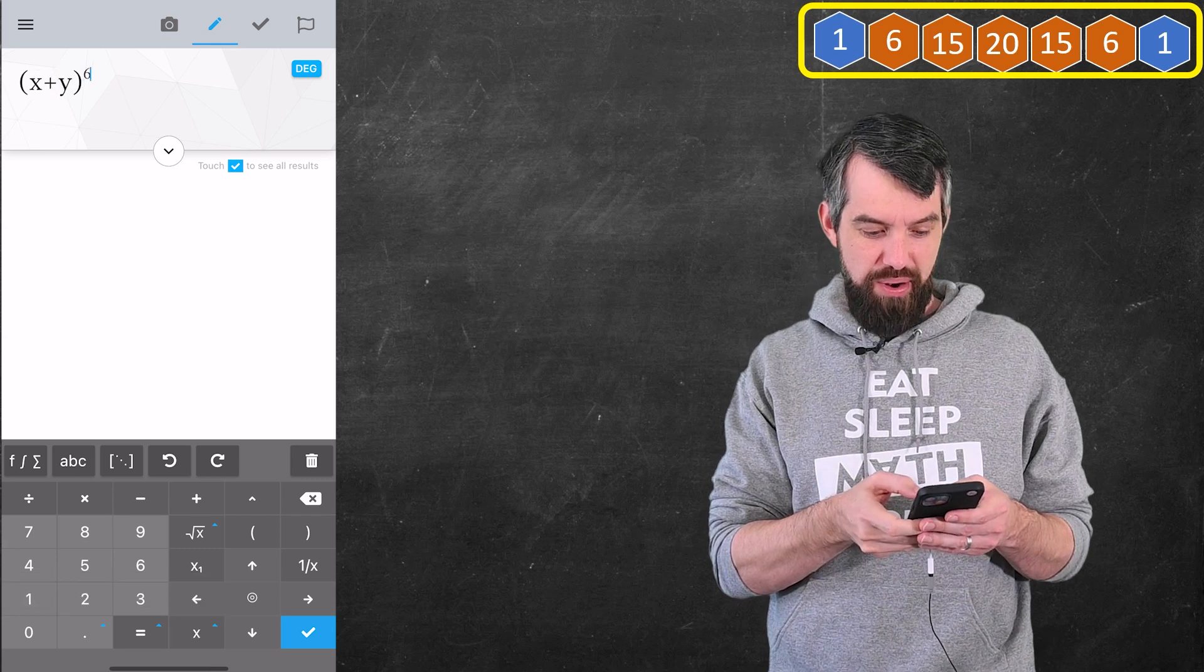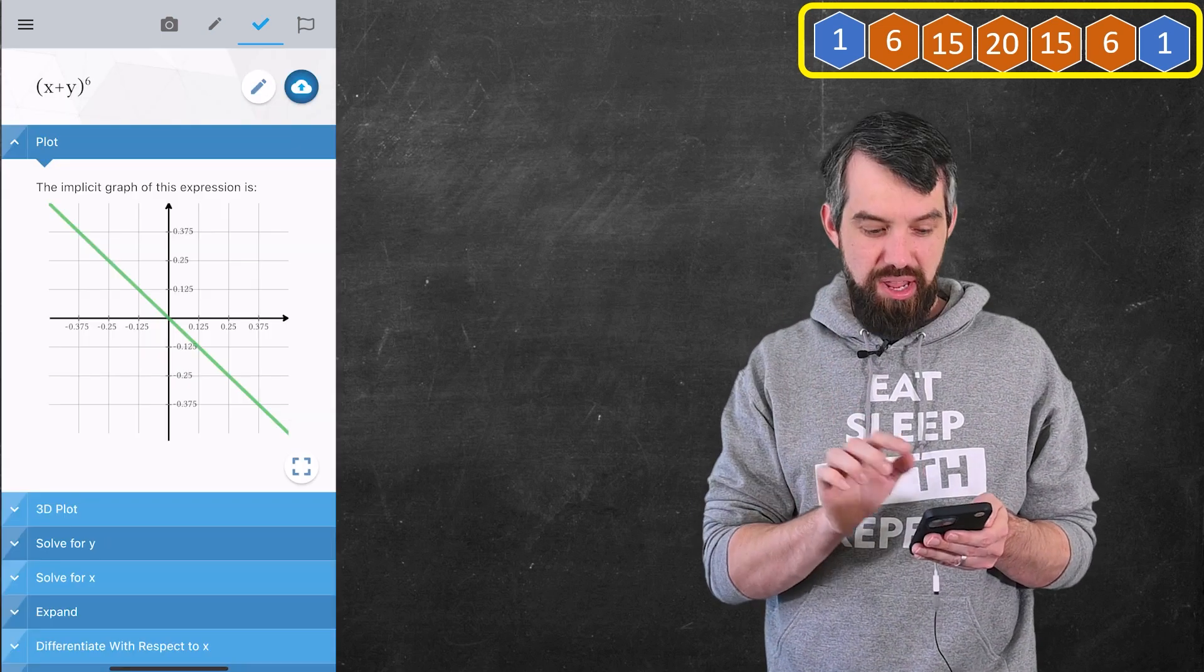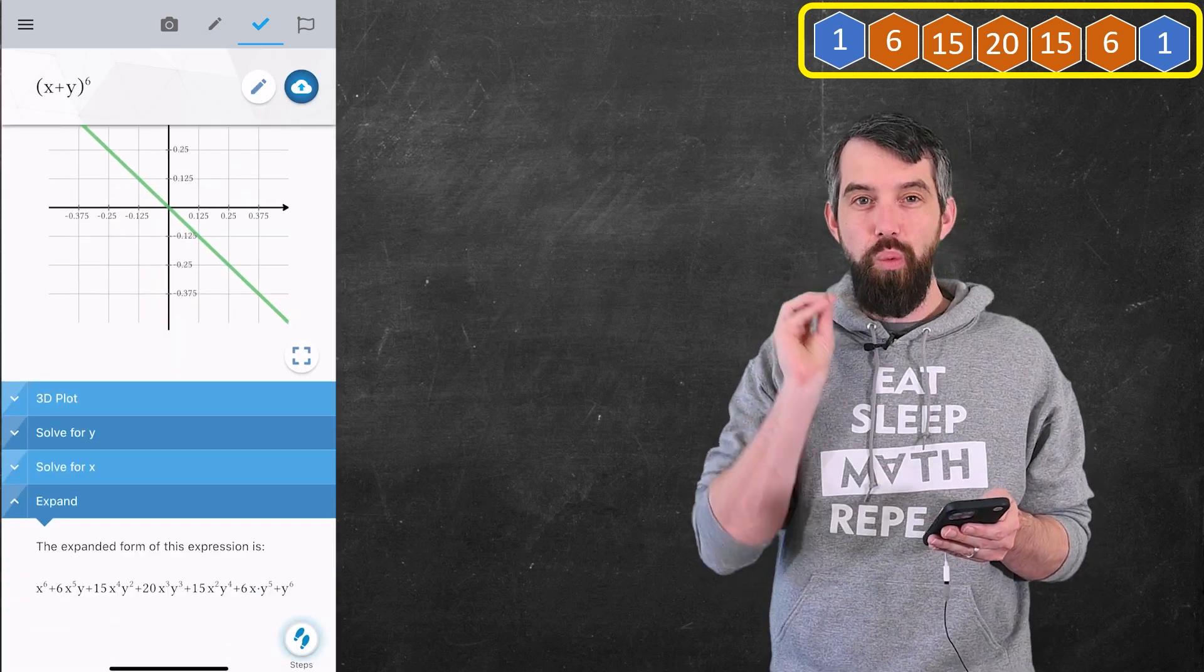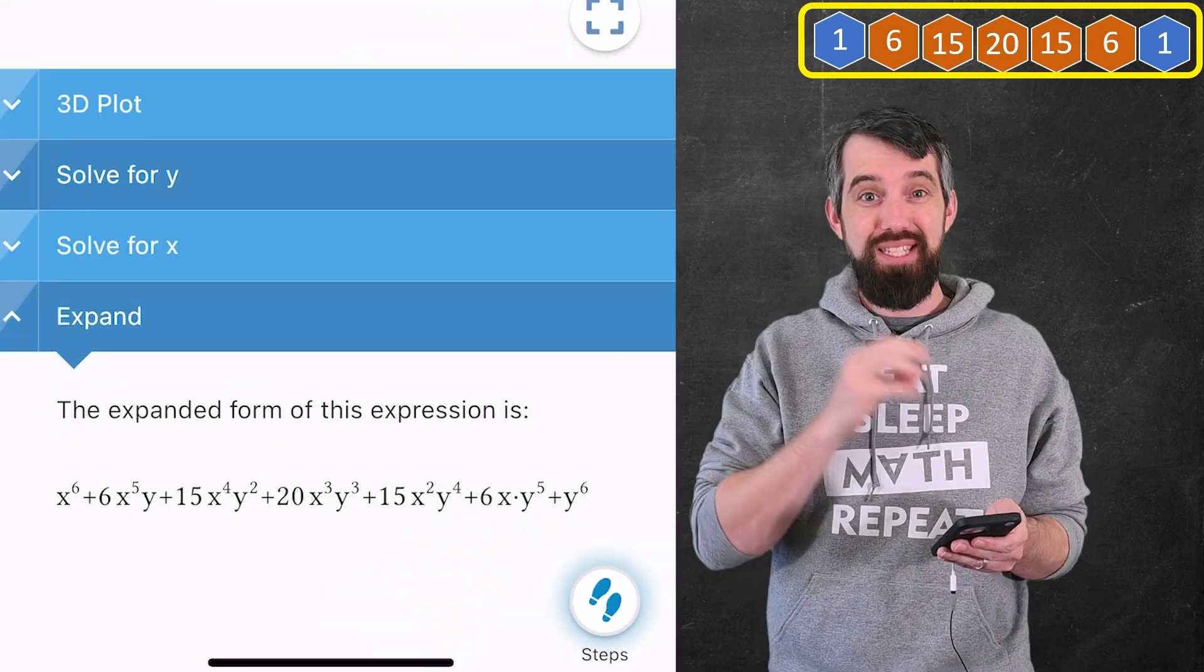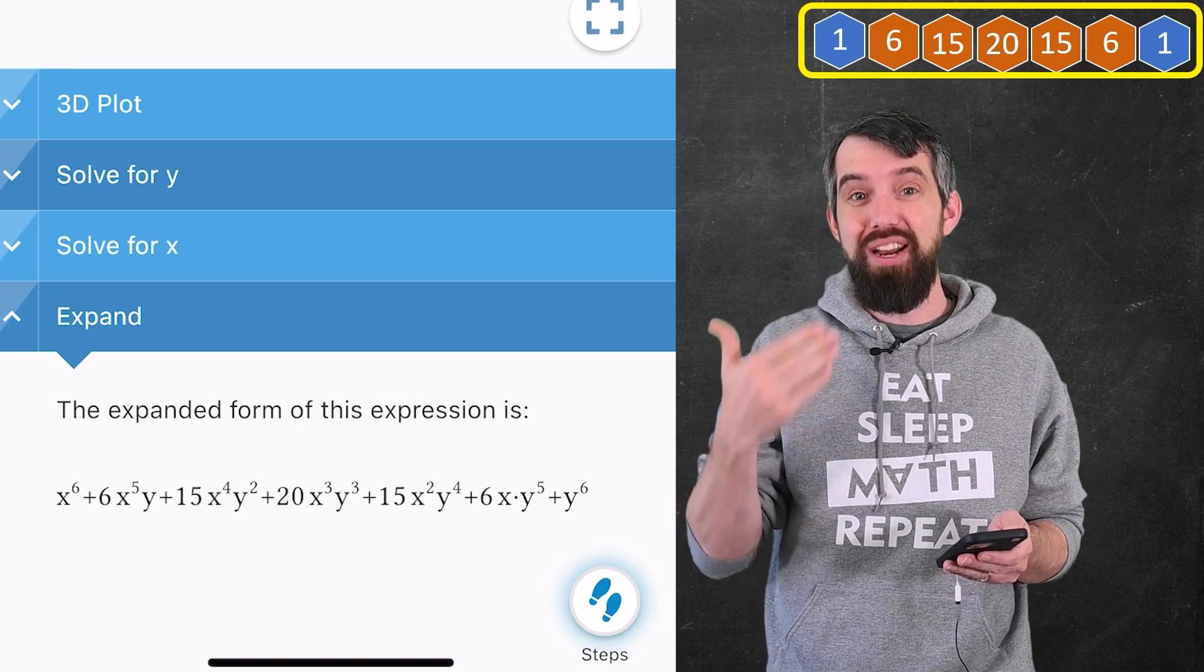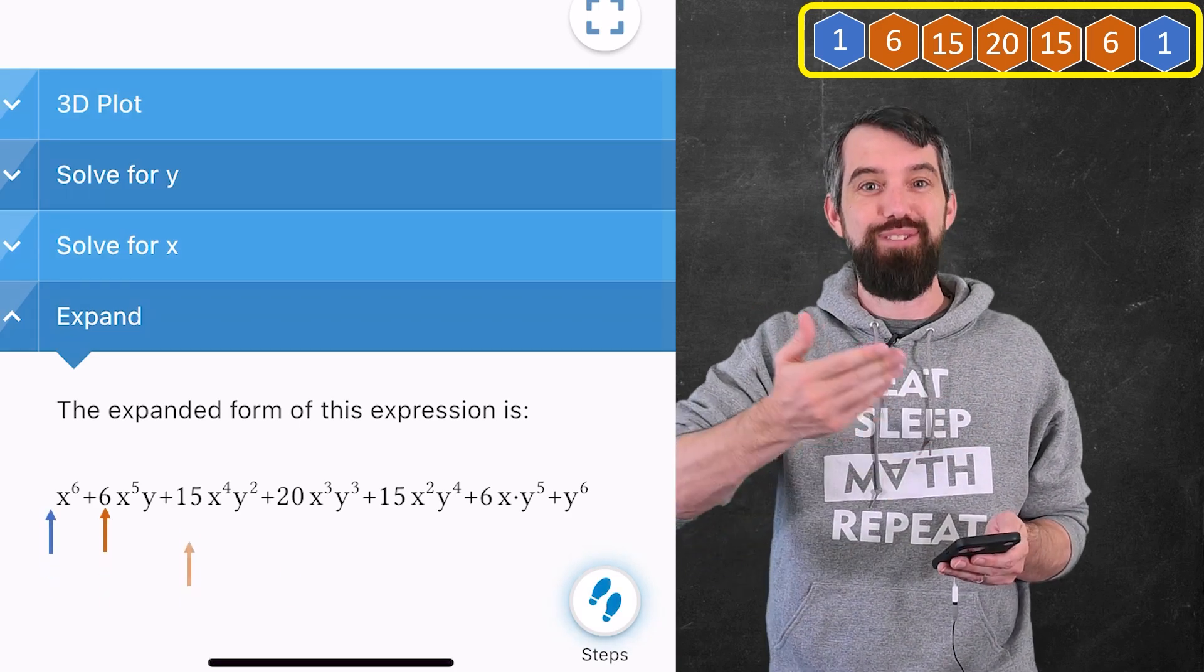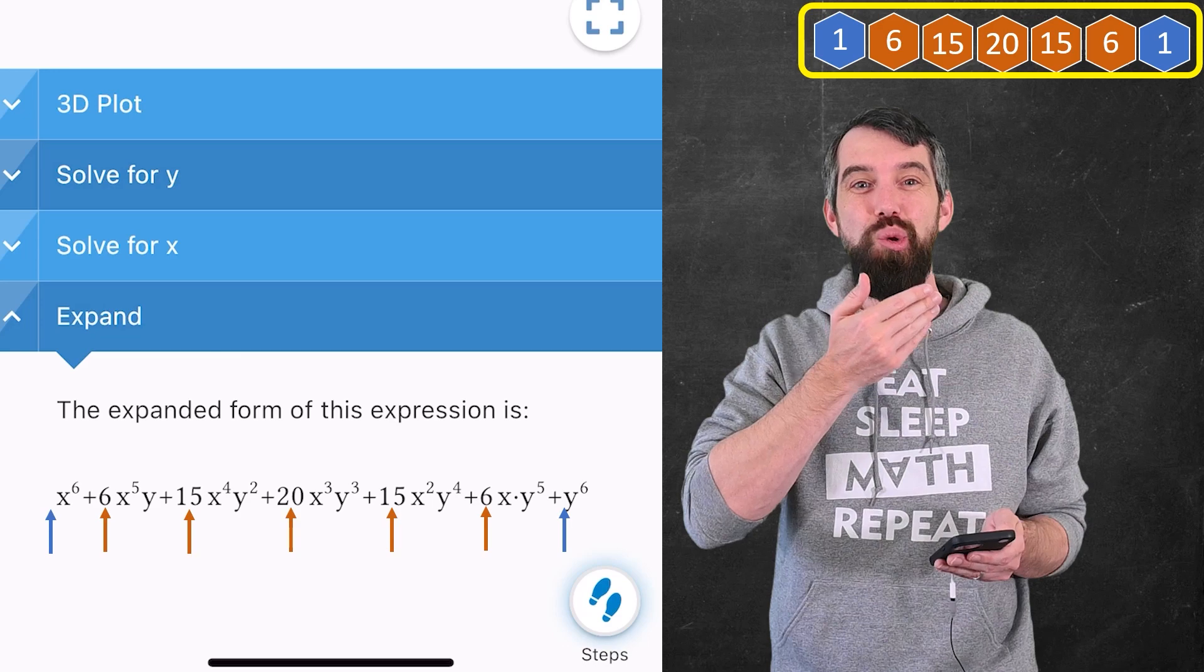I'm going to go x plus y to the power of 6, and if I come down here and click the expand button, what I see is the expansion of x plus y to the power of 6. And those exact numbers for Pascal's triangle are appearing as the coefficients of this expansion: 1, 6, 15, 20, 15, 6, and 1.